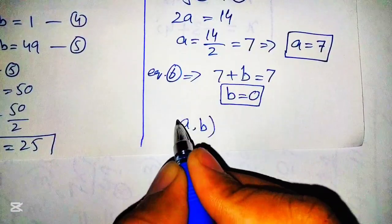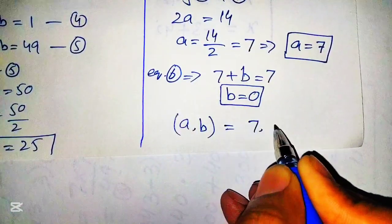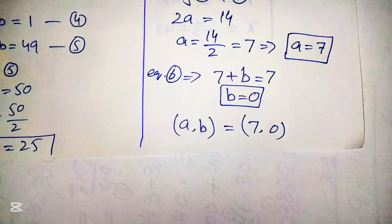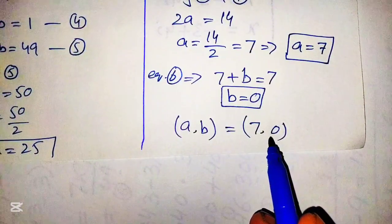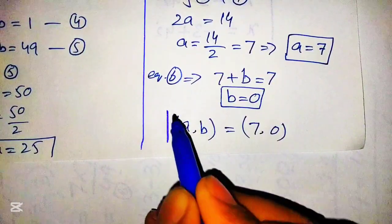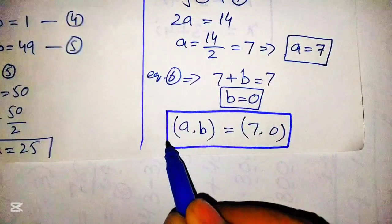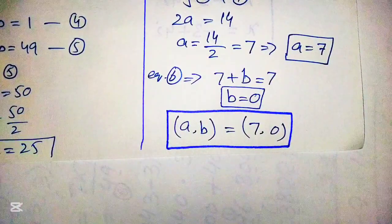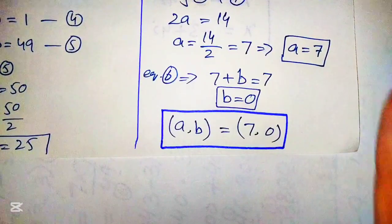The third pair of solutions is (a, b) equals (7, 0). This is acceptable because both values of a and b are greater than or equal to zero. Hence, the solutions to the given equation are (a, b) = (25, 24) and (a, b) = (7, 0). Thank you so much for watching this video. Please subscribe to my channel for more interesting videos.